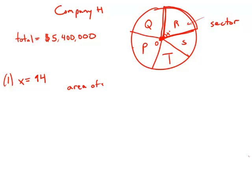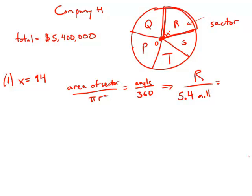The area of a sector over the area of the circle, which is pi R squared, equals the angle of the sector over 360. Here, the area of the sector is R. The area of the total circle, that's the total cost which is 5.4 million. The angle is 94 degrees over 360 degrees, and we could solve this proportion for R.